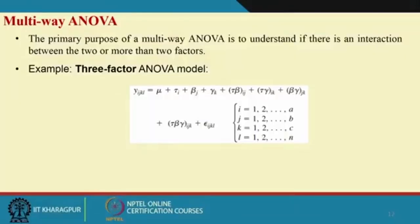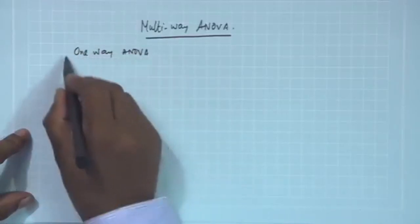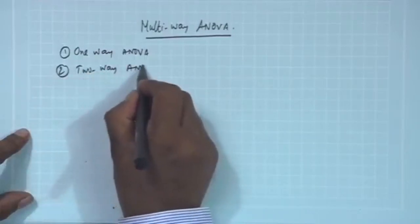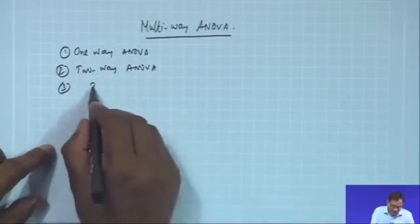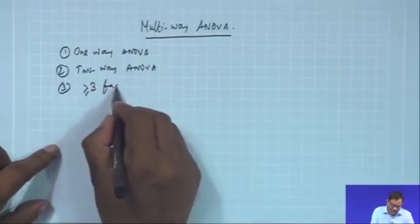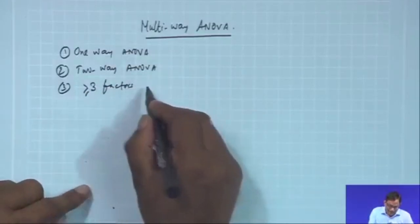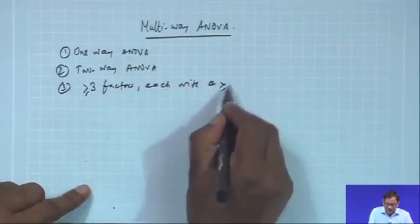Welcome. Now we will discuss multi-way ANOVA. I hope that you have understood one-way ANOVA and two-way ANOVA. Now we will be discussing multi-way ANOVA. Multi-way means 3 or greater than equal to 3 factors, where each with greater than or equal to 2 levels.